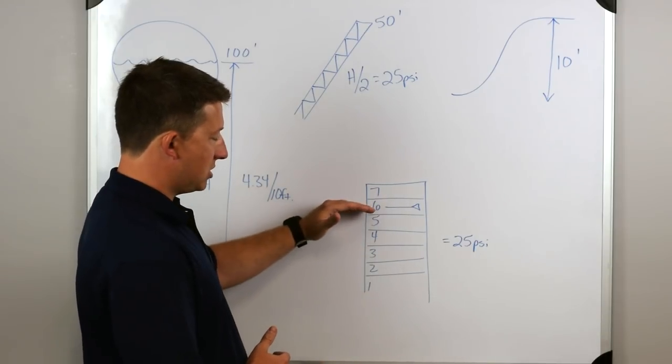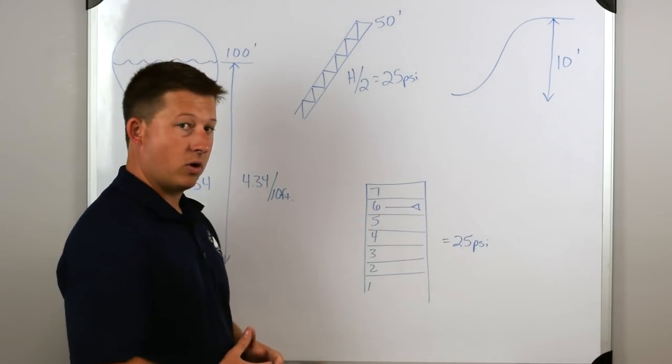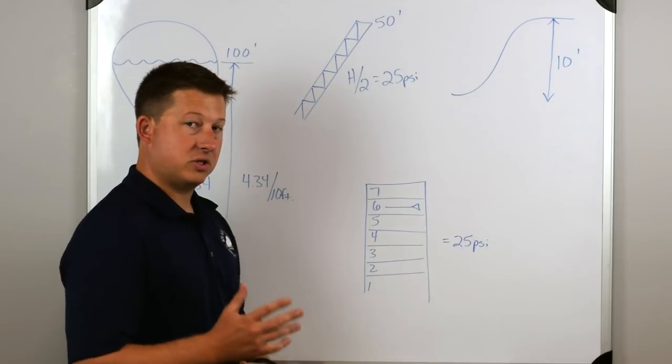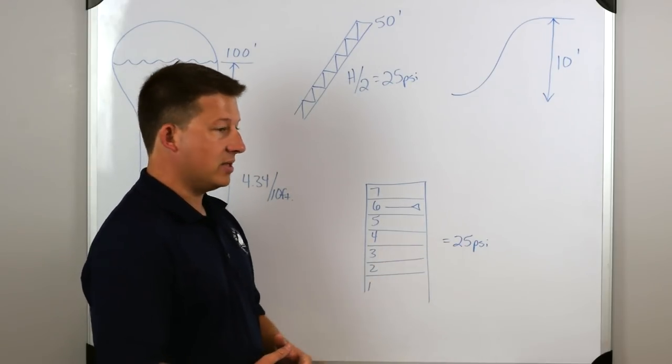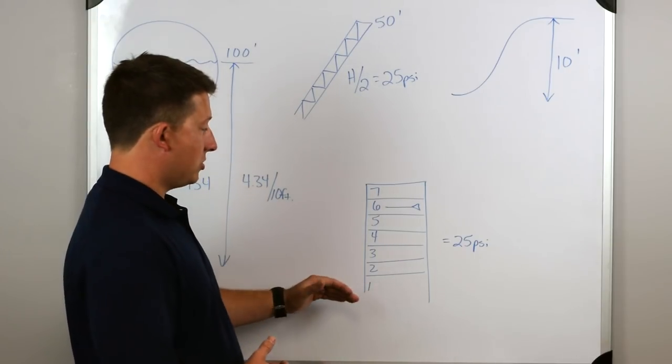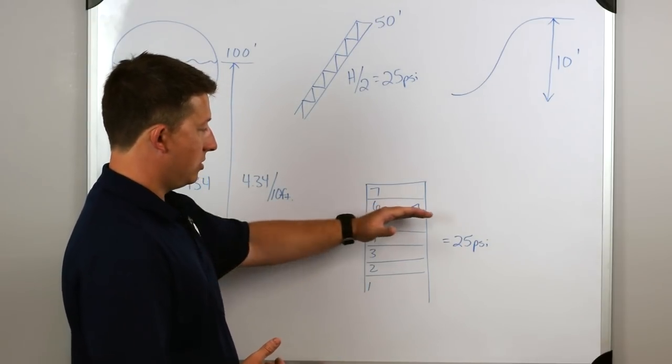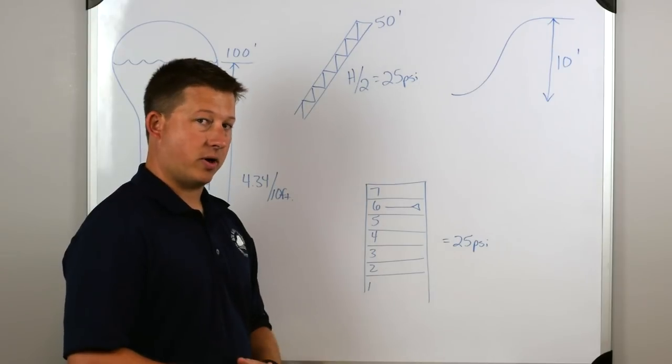In this case, it's the sixth floor. We're operating on the sixth floor. We're going to subtract the first floor, which is 5, and multiply that by 5. So we get 25 PSI. What we need to add to our pump discharge pressure to get this correct, to get the nozzle pressure correct.